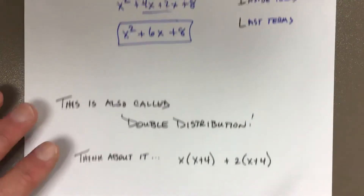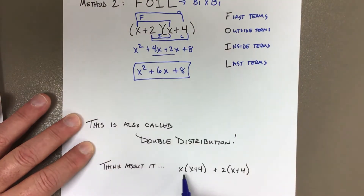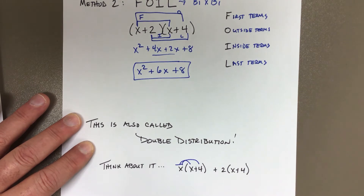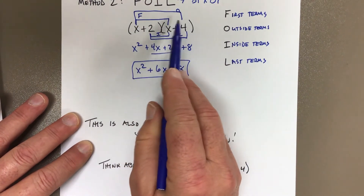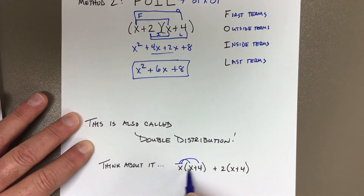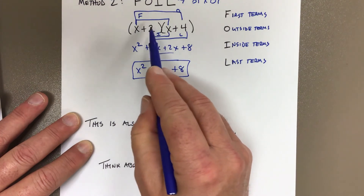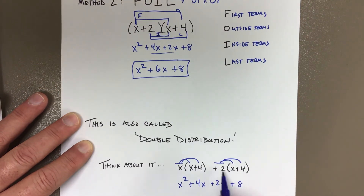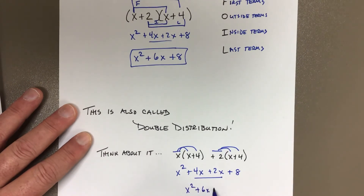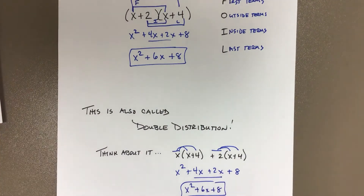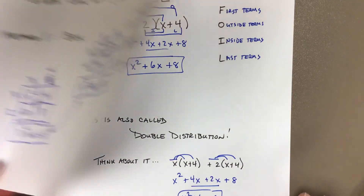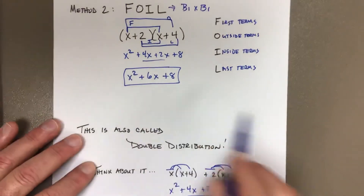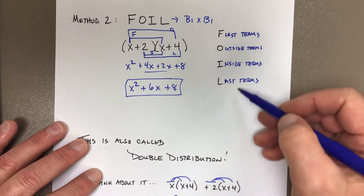Sometimes we call it double distribution. Take x plus 2 and split it up: distribute the x to get x times x equals x squared and x times 4 equals 4x. Then distribute the 2: 2 times x is 2x, and 2 times 4 is 8. Combine the middle terms and you get the same answer. Double distribution, FOIL, and the box are all the same thing — FOIL is just the most common.